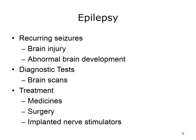Another serious brain disorder is called epilepsy. Epilepsy is a brain disorder that causes people to have recurring seizures. The seizures occur when clusters of nerve cells or neurons in the brain send out the wrong signals. There are many possible causes of epilepsy, including illness, brain injury, or abnormal brain development. Sometimes the cause is unknown. Diagnostic tests include brain scans. There is no cure, but medicines can control seizures for most people. Other treatments include surgery or implanted devices, such as vagus nerve stimulators.